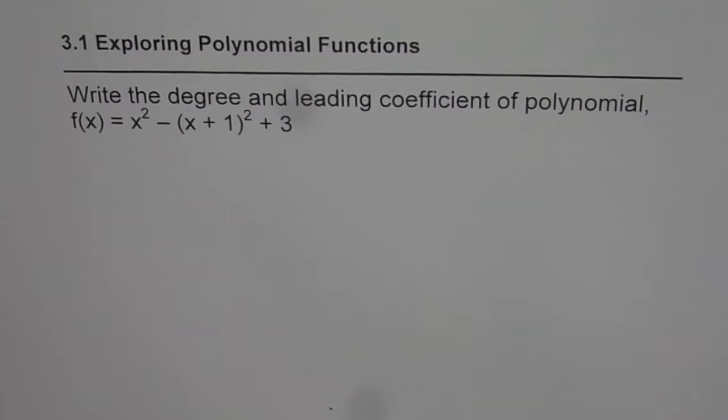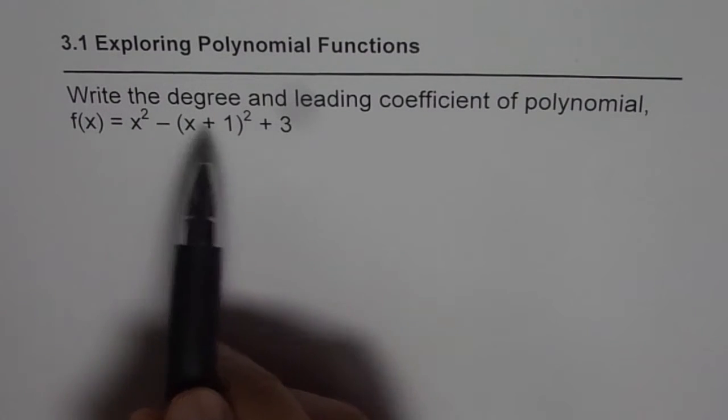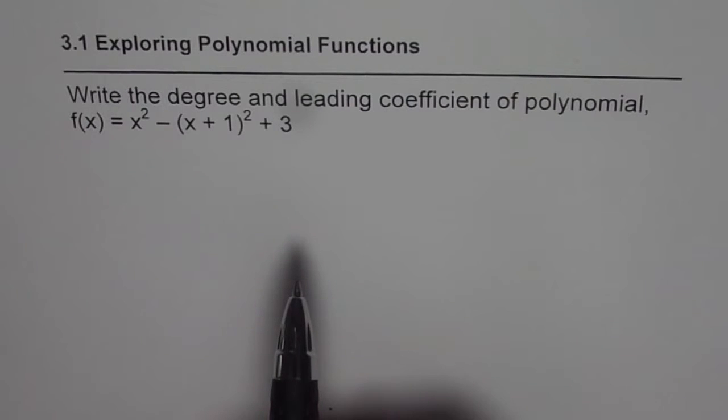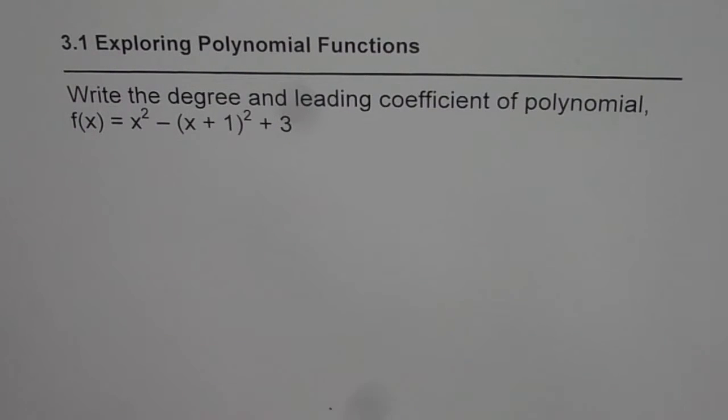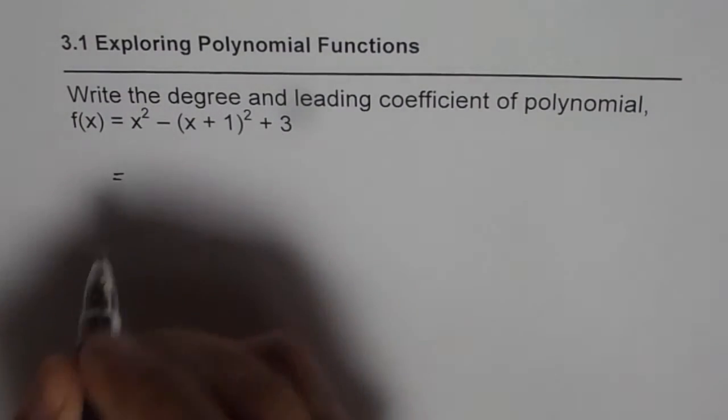It says write the degree and leading coefficient of the polynomial f(x) = x² - (x+1)² + 3. I have seen students making mistakes here when they see x squared, they write down that the degree of the polynomial is 2. But let us expand and see what it really is.